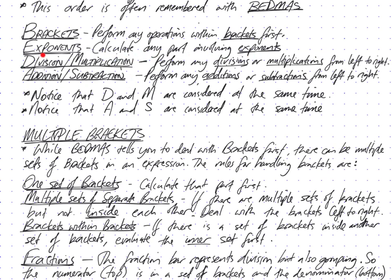Now this is where it gets slightly more complicated. The D and M stand for division and multiplication, and you need to consider them at the same time. You perform divisions and multiplications as they go from left to right — you don't just do division first and then multiplication after. Then after you've handled divisions and multiplications, you've got A and S, which stand for addition and subtraction.